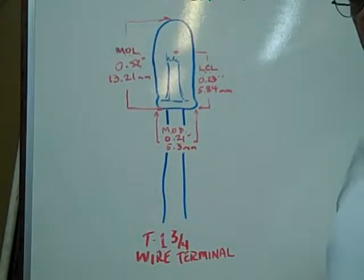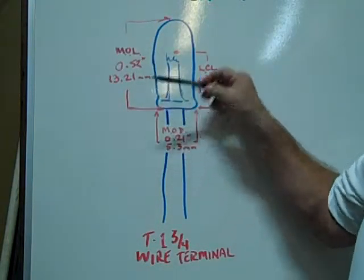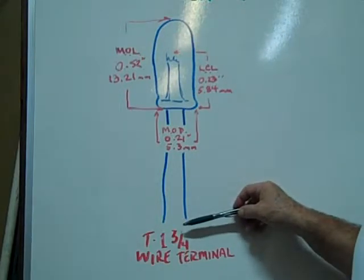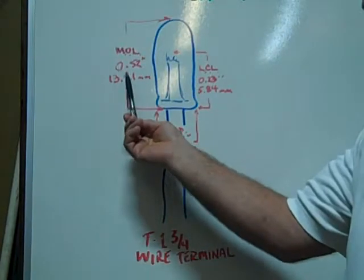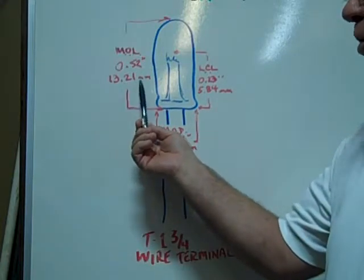The T1-3 quarter wire terminal base bulb has a maximum overall length of just the glass envelope, not including the wire terminals, of 0.52 inches, 13.21 millimeters.